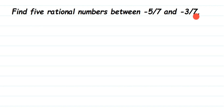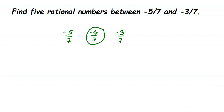We have the numbers -5/7 and -3/7. Let's see how many rational numbers we can find between these two. Between -5/7 and -3/7, there's only one number I can get, which is -4/7 — after -5 comes -4, and after -4 comes -3. So only one rational number can be found between these two directly.